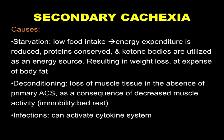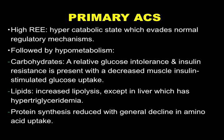In primary cachexia, you have a general state characterized by high resting energy expenditure, or a high basal metabolic rate. This is a hyper-catabolic state where the body is breaking down mainly protein to provide energy. It's also associated with hypometabolism — you don't have normal metabolic processes going on. There is relative glucose intolerance with delayed insulin production and some insulin resistance driven by factors like TNF-alpha.